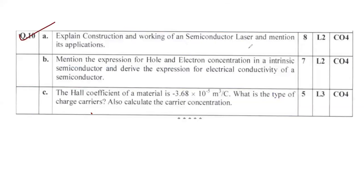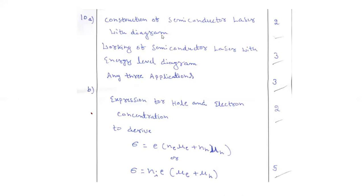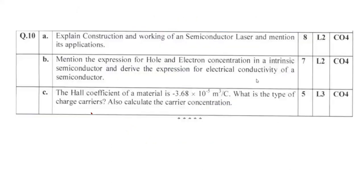Question 10a: Explain the construction and working of a semiconductor laser and mention its applications. The construction carries two marks — don't forget to draw the diagram. The working of the semiconductor laser should include the energy level diagram, requiring you to recall band theory. Mention any three applications for three more marks. Total: eight marks.